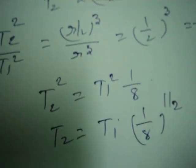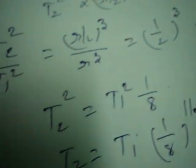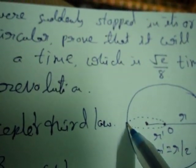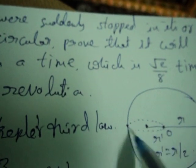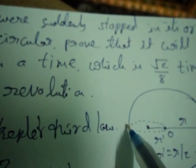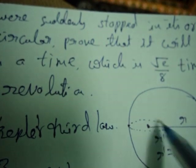T1 is the time period of revolution when the planet is moving in circular orbit. T2 is the time period to complete the elliptical orbit with radius R' equal to R by 2. But we only need the time for the planet to move from its stopped position to the sun, which is half of T2.